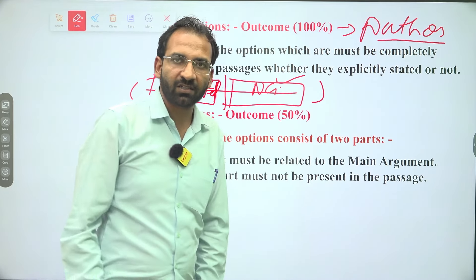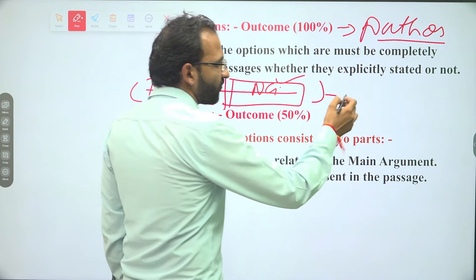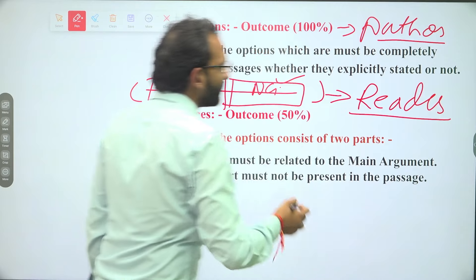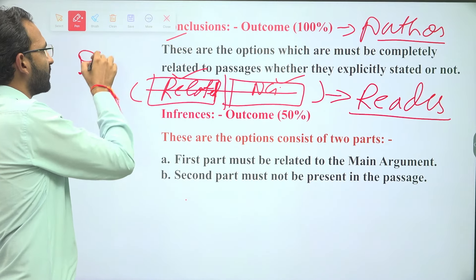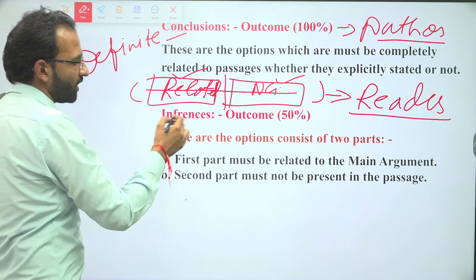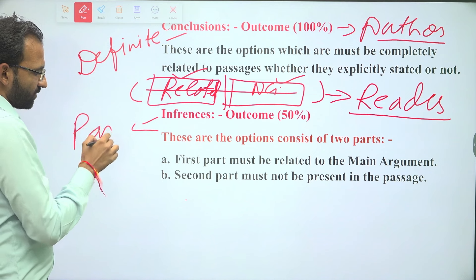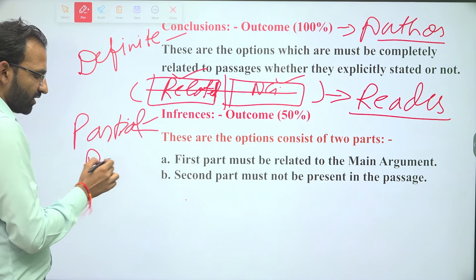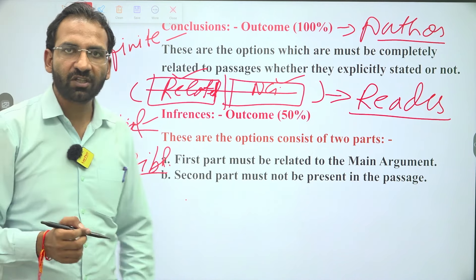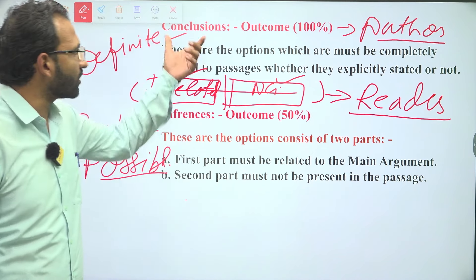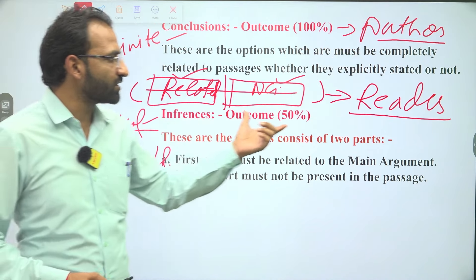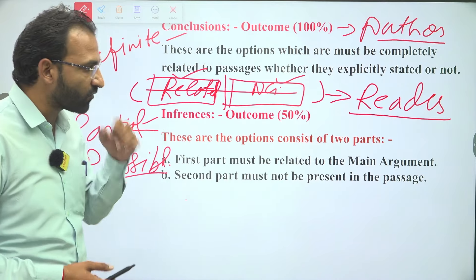Author ne aapke saamne jo opinions aur point of views rakhe hain, unke base par jo inference hota hai woh hamesha reader ke perspective se aata hai. That's why jo conclusion hota hai woh definite nature ka hota hai — and that is of the author's perspective — and inferences are of the reader's perspective.